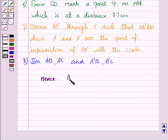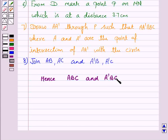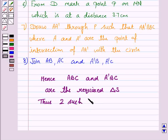Hence, ABC and A'BC are the required triangles. Thus, two such triangles are possible.